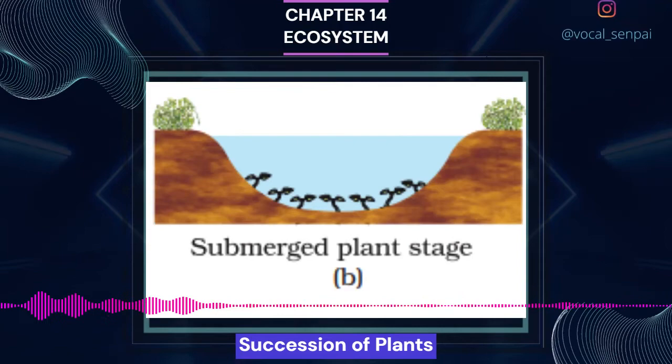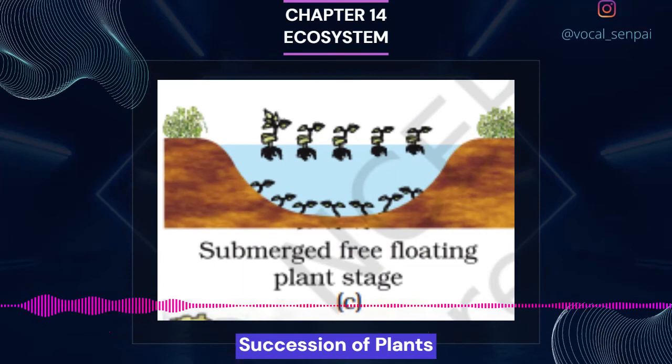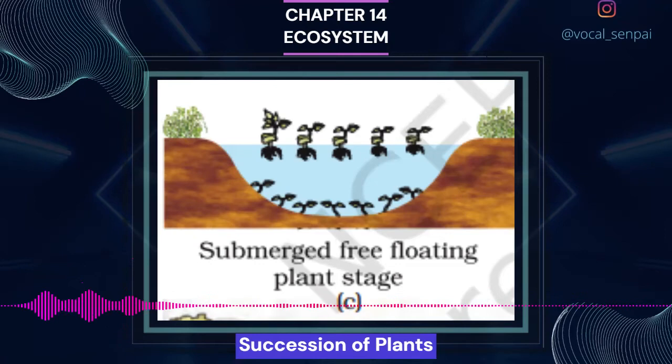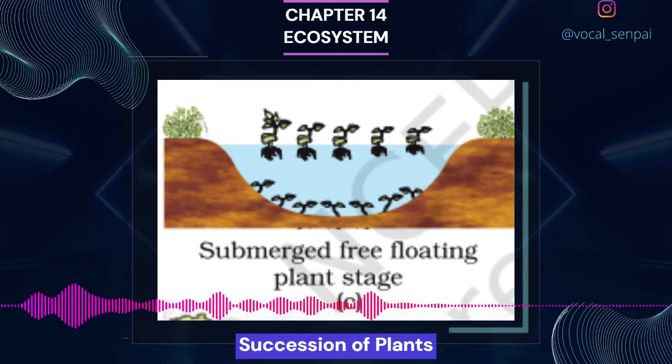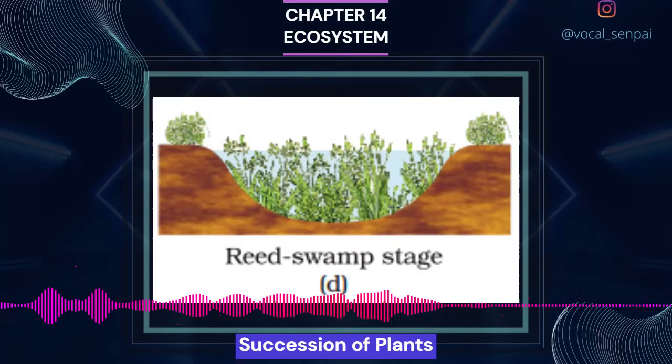The species that invade a bare area are called pioneer species. In primary succession on rocks, these are usually lichens, which are able to secrete acids to dissolve rock, helping in weathering and soil formation. These later pave way to some very small plants like bryophytes, which are able to take hold in the small amount of soil. They are, with time, succeeded by higher plants and after several more stages, ultimately a stable climax forest community is formed.